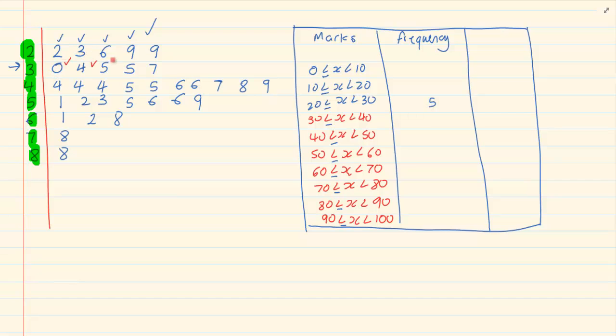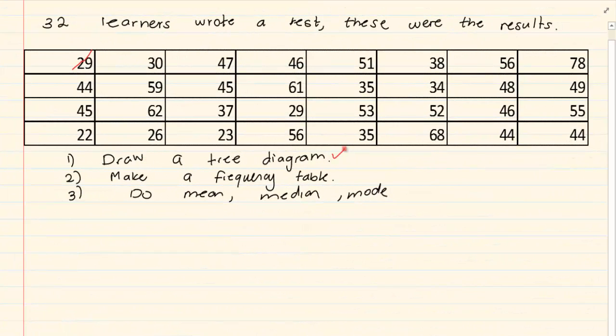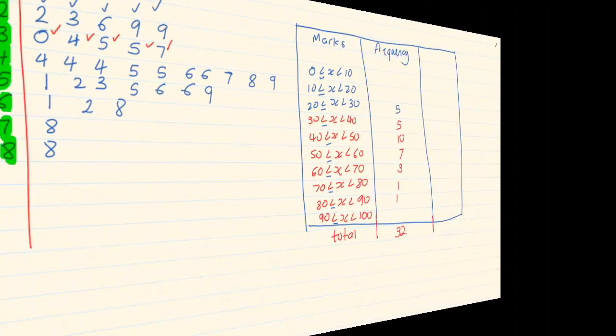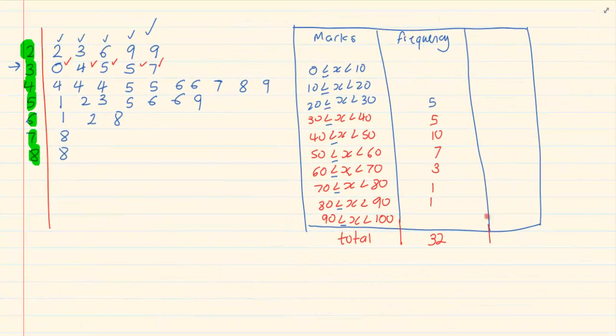30 to 40 has a frequency of 5. Then 40 to 50 has a frequency of 10. 50 to 60 has 7. 60 to 70 has 3. 70 to 80 has 1. 80 to 90 has 1. What is our total? 32.